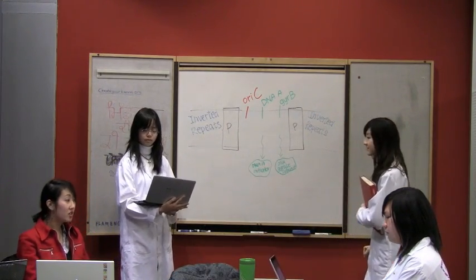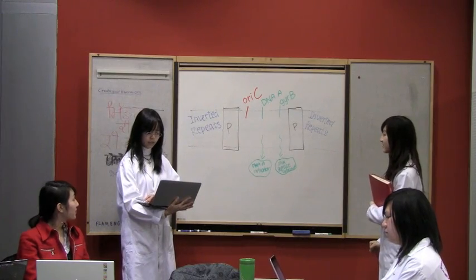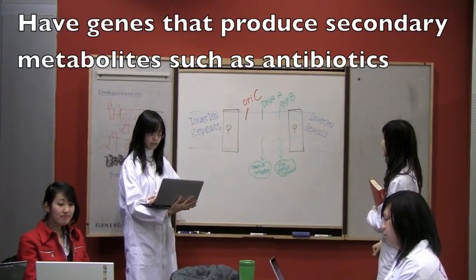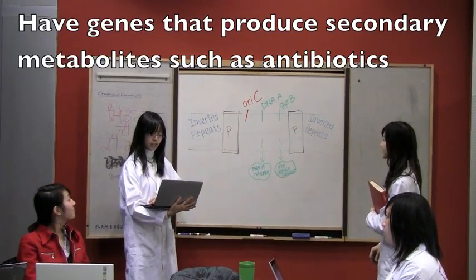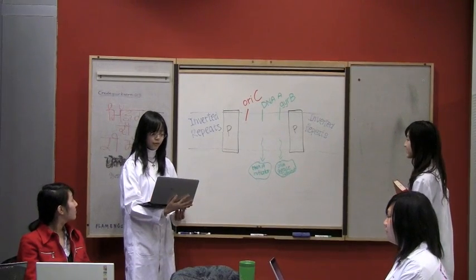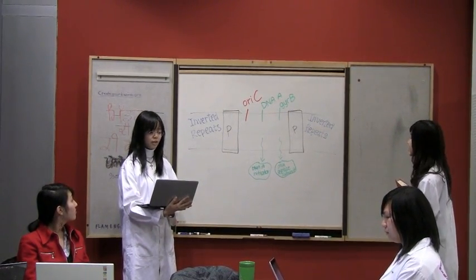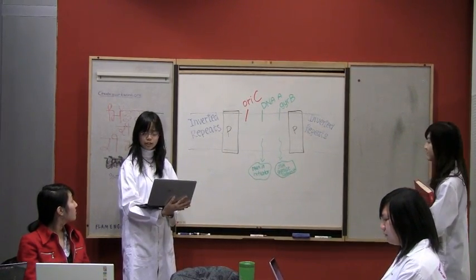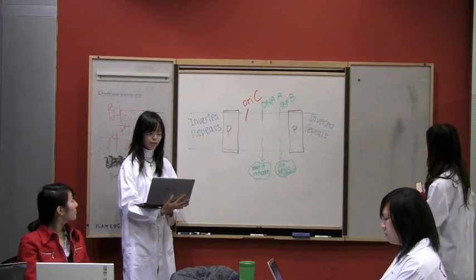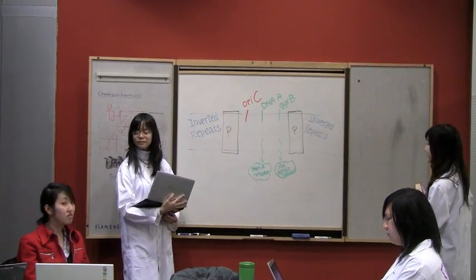Where do antibiotics come in? They have the genes to produce secondary metabolites such as antibiotics, like streptomycin and chloramphenicol. Some species have more than 100 expressed genes for antibiotic production, which constitute more than 1% of the genome.